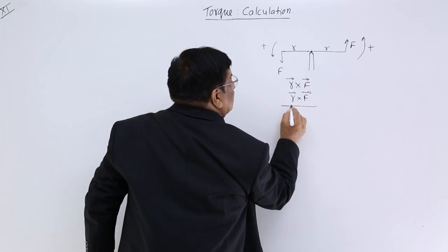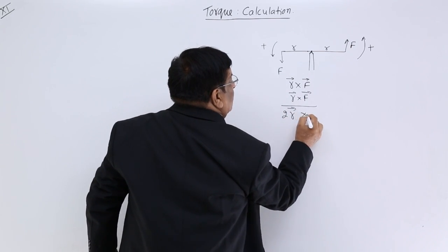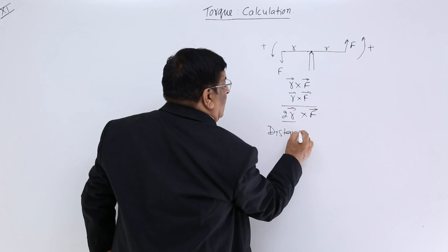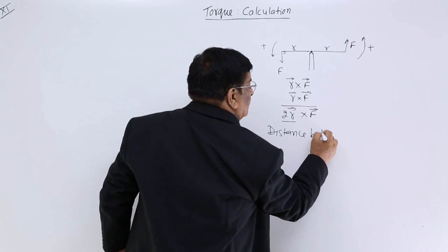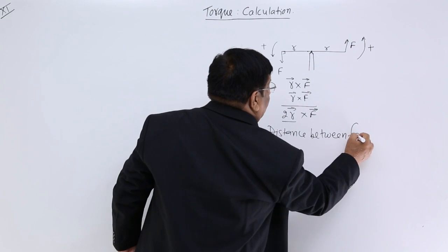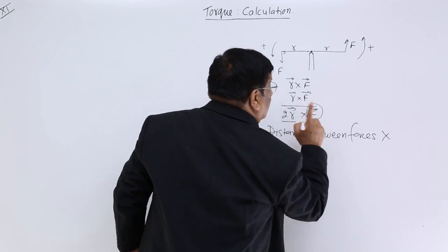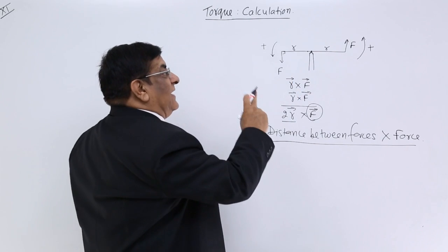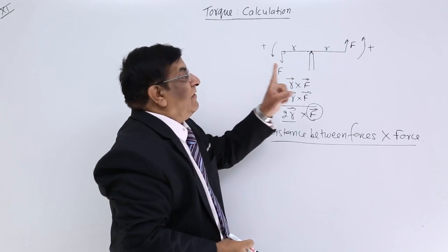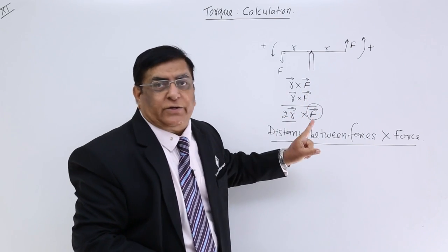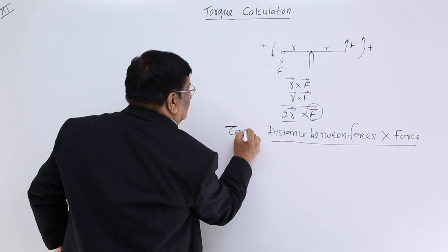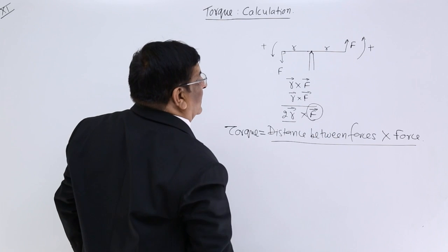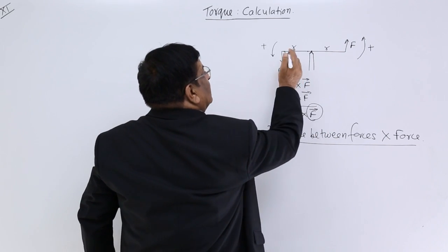How much is the total moment? That is 2R cross F. What is 2R? The distance between the forces — the normal distance between the forces, multiplied by force. This gives the effect due to which it will turn, and we have given the name to this effect as torque. So this is our formula for torque — the effect which rotates it: distance between the two forces multiplied by force.